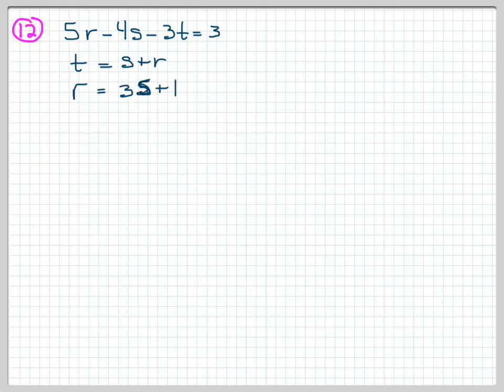This is problem number 12 from the homework. In problem 12 we've got 5r minus 4s minus 3t equals 3, we've got t equals s plus r, and we have r equals 3s plus 1. We're going to have to be very careful with s's and make sure we don't think of them as 5's.